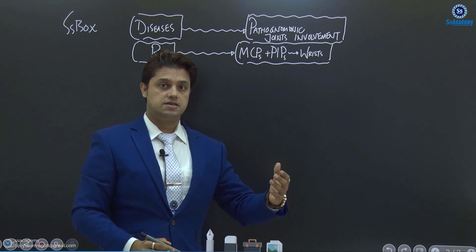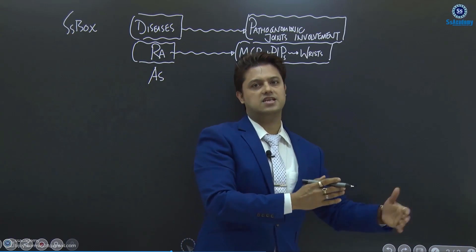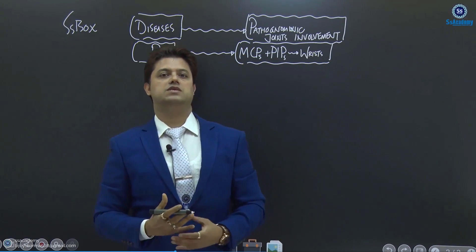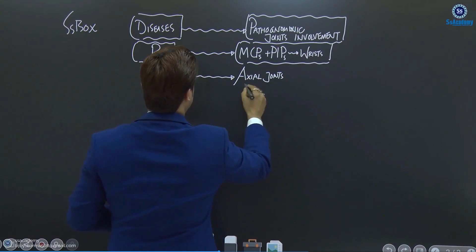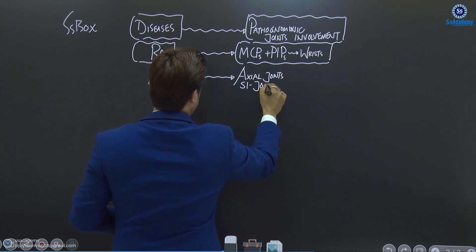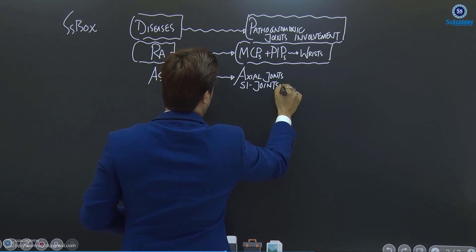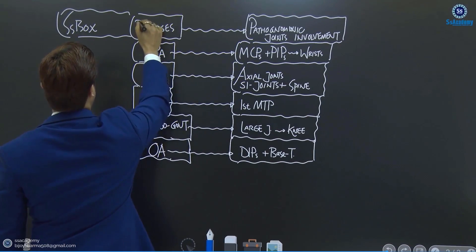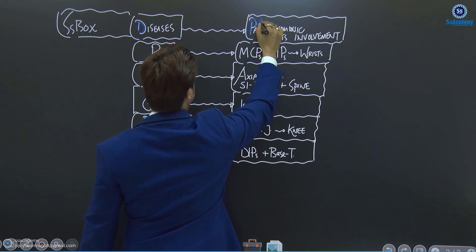Rheumatoid arthritis is a seropositive disease, whereas ankylosing spondylitis is a seronegative disease. Rheumatoid arthritis involves the appendicular joints especially, but the most important joints in ankylosing spondylitis are the sacroiliac joints plus the spine. This sacroiliac and spinal involvement is the pathognomonic joint involvement of ankylosing spondylitis.